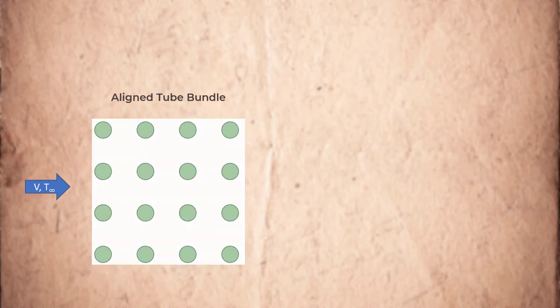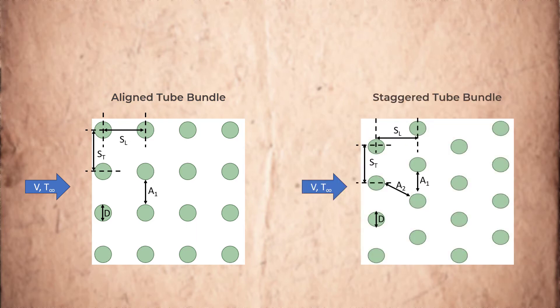These tubes can be arranged either in an aligned or staggered form. In the aligned arrangement, successive rows are longitudinally displaced from each other. In a staggered arrangement, however, in addition to the longitudinal offset, the tubes are also offset in the transverse direction.